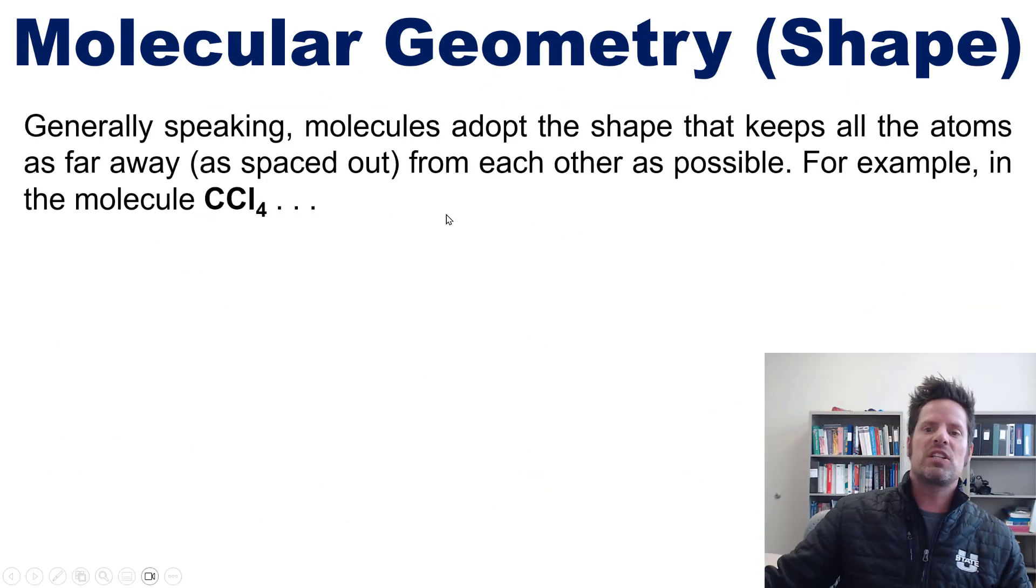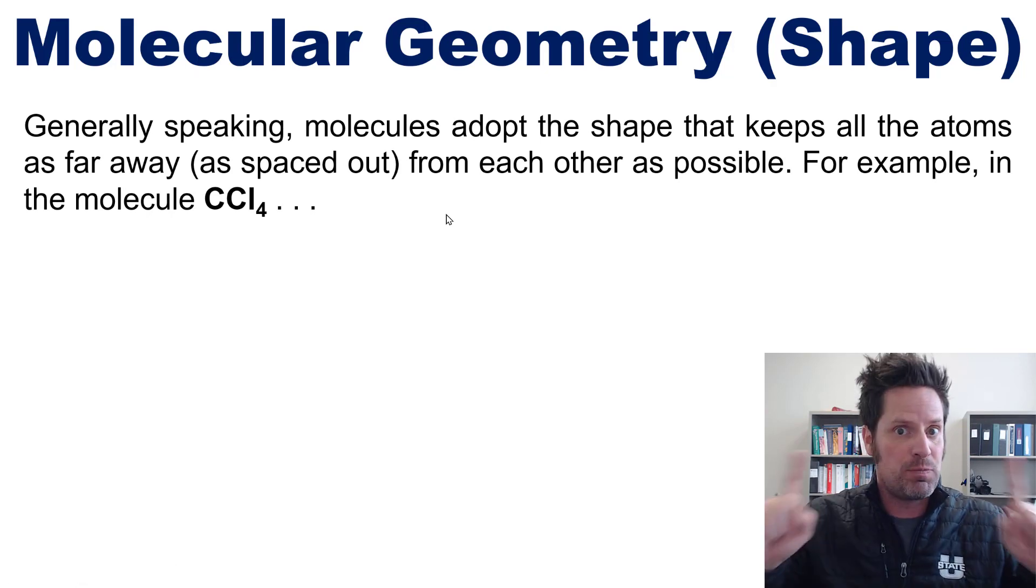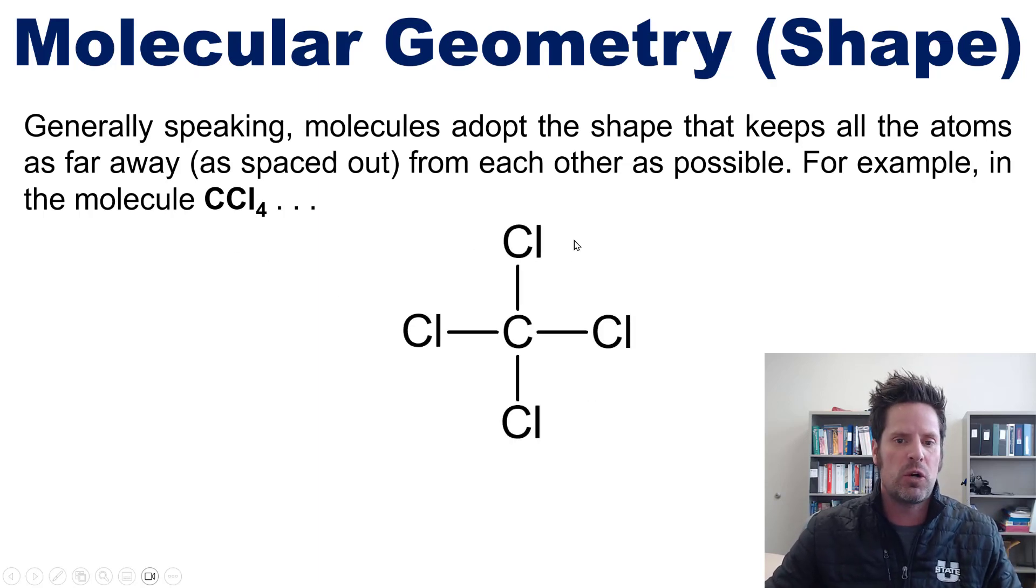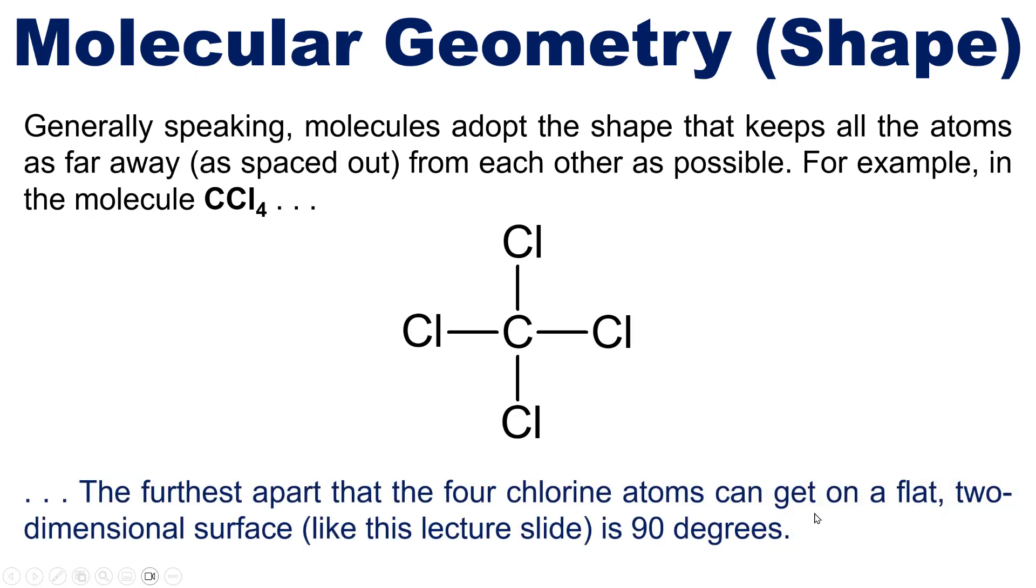Generally speaking, molecules adopt the shape that keeps all of the atoms in them as far away, that is as spaced out, from each other as possible. For example, in the molecule carbon tetrachloride, whose Lewis structure is shown right here minus the lone pairs on the chlorines that I've left out for simplicity, the furthest apart that the four chlorine atoms can get on a flat two-dimensional surface like this lecture slide is 90 degrees.